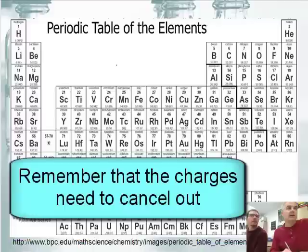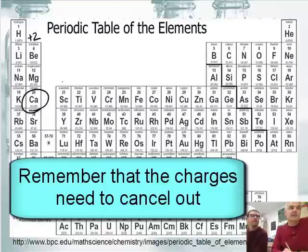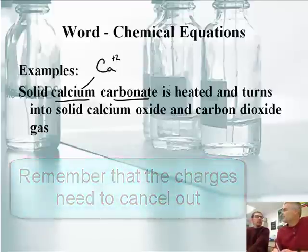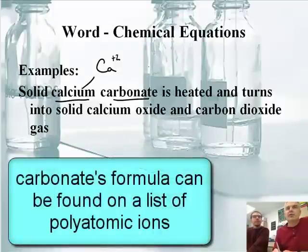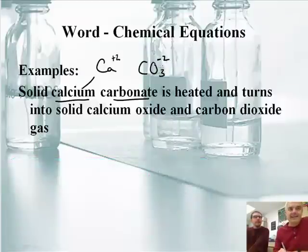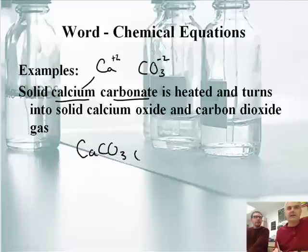So I just look at the periodic table. Here is calcium right here, and calcium is plus two — he's in the column plus two, that's how we figure that out. I'm going to write plus two right here. And then carbonate — that's the polyatomic ion from your polyatomic ion list. That's CO3, negative two. The charges add up to zero, so the formula is CaCO3, solid.